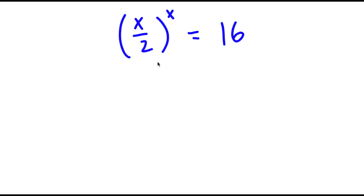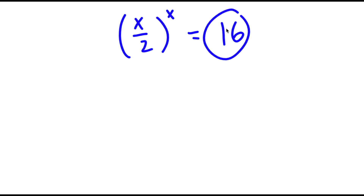In this problem, I have (x/2) to the power of x is equal to 16. To solve this, I'm going to first start by rewriting 16 as 2 to the power of 4.